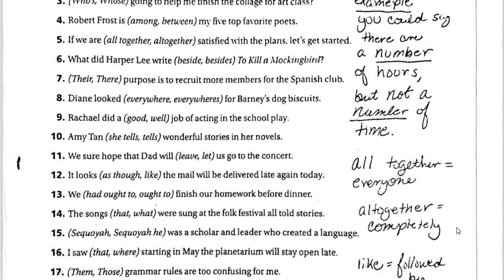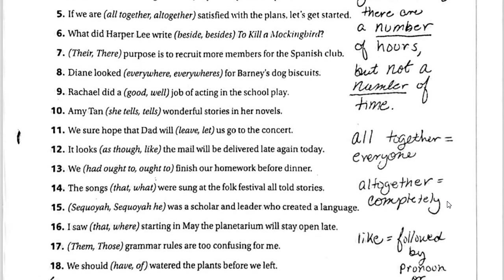Then we've got all together versus altogether. The two-word version, all together, pertains to everyone — people or individual things, every individual. Versus altogether as one word, which means completely — as in, we are covering this document altogether, meaning in its entirety.